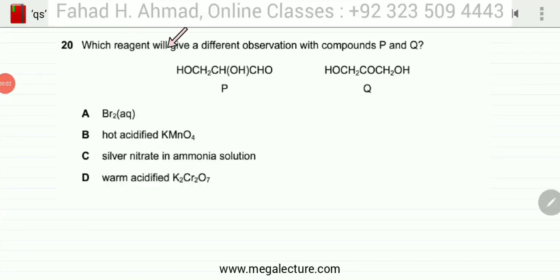The following question reads: which reagent will give a different observation with compound P and Q? There are two compounds given and we need to figure out which of the following reagents would give a different observation with either one of them.